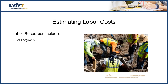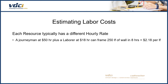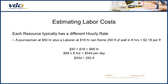Labor resources include journeymen, laborers, foremen, etc. These are all different types of labor resources, and each resource typically has a different hourly rate. A journeyman at $50 an hour plus a laborer at $18 an hour can frame 250 linear feet of wall in 8 hours — that equals $2.18 per linear foot. That's $50 plus $18 equals $68 an hour, times 8 hours per day equals $544 per day. Divide that by 250 linear feet, and that equals $2.18 per linear foot.